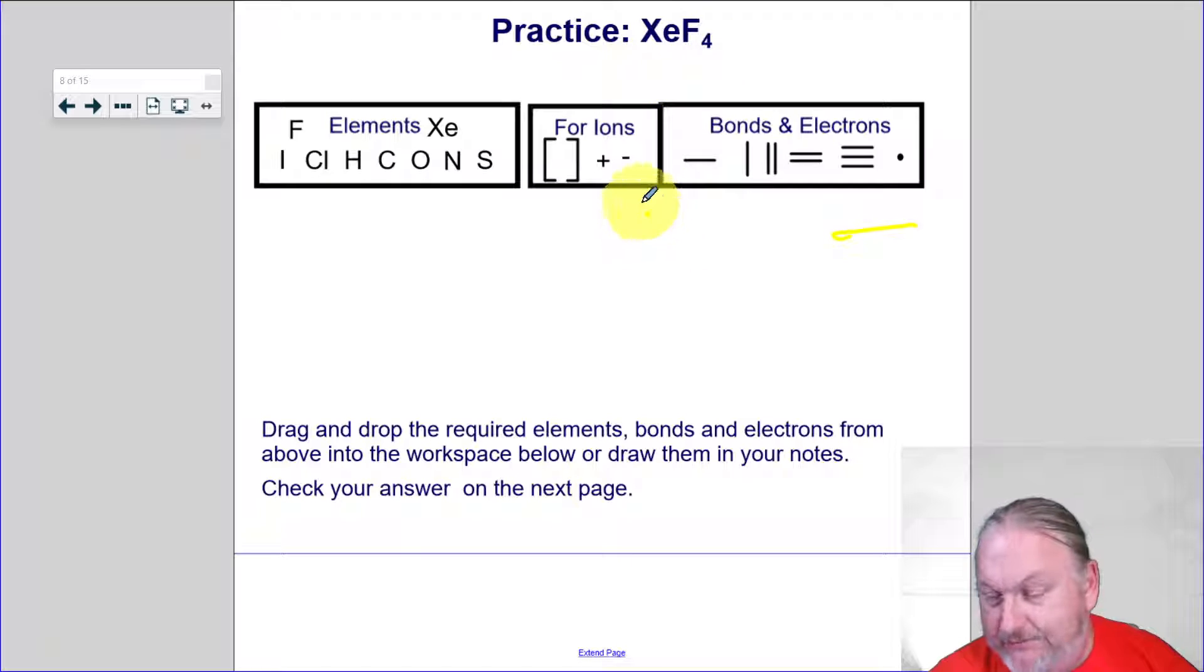XeF4. So that's got eight electrons. And then four times seven plus eight, four times seven. Seven valences there. And again, fluorine is extremely electronegative. So it can pull some of those deeper electrons from the xenon.